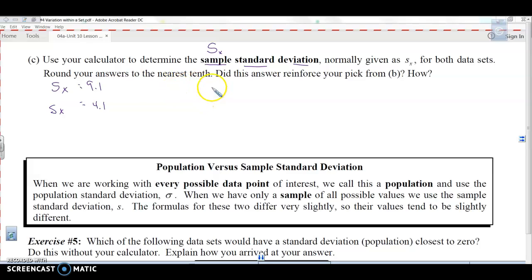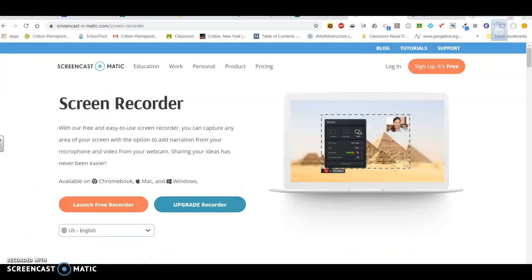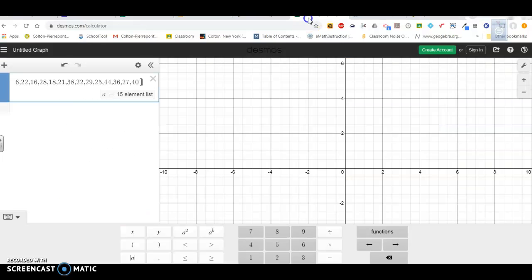Sample standard deviation, in this case we did on the calculator, was 9.1. If you want to do it on Desmos, here's Desmos. I entered soda A into my list. You can see right there, there's soda A.